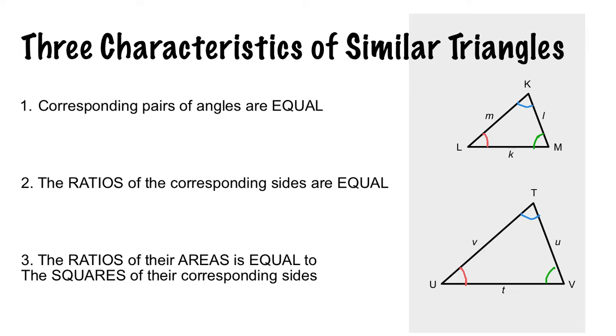The second rule is that the ratios of the corresponding sides are equal. What this means is that M compared to V will be the same number as L compared to U. So if M compared to V is one-half, then L compared to U would be one-half, as would K compared to T. The ratio or the fraction relationship will be exactly the same.